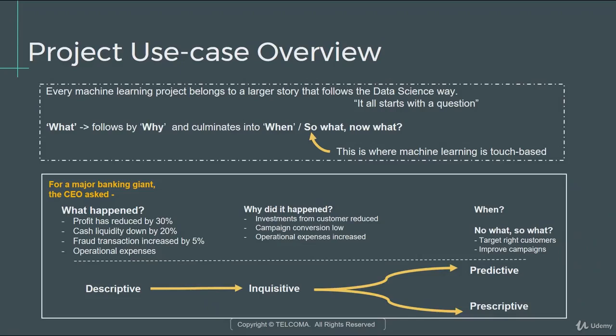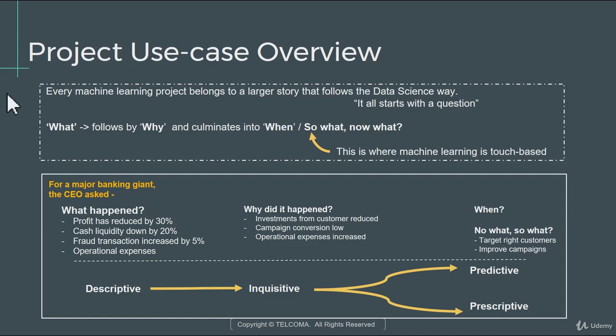Let's start with a simple overview for the project use case. Every machine learning project actually belongs to a larger story that follows the data science field. It all starts with a question — if you try to boil it down into a simpler objective, we can say it starts with a simple question: what happened?